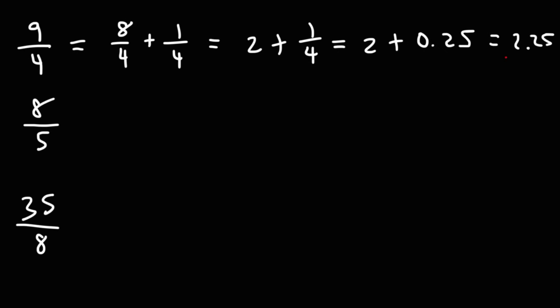So that's what you can do to convert an improper fraction to a decimal mentally. 8 over 5, we can write that as 5 over 5 plus 3 over 5. 5 plus 3 is 8. 5 divided by 5 is 1, and we know that 3 over 5, that's not on the list.